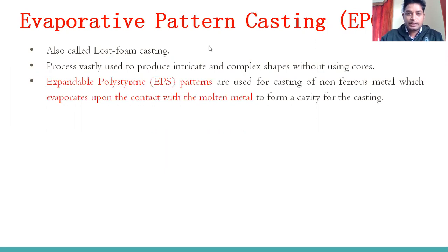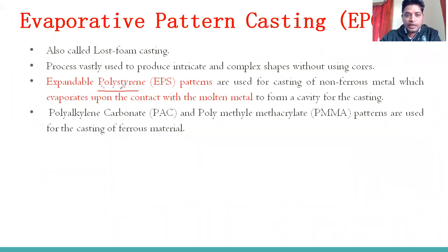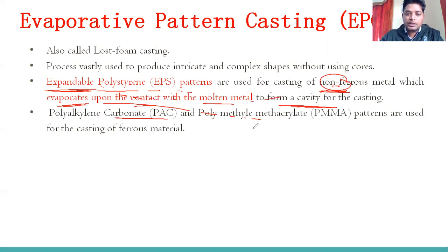Polystyrene is used in its expandable foam form for the pattern, and is used when casting non-ferrous materials. When the molten material comes in contact with the pattern, the pattern evaporates, forming a cavity for the casting. Similarly, PAC and PMMA are used for the casting of ferrous materials.